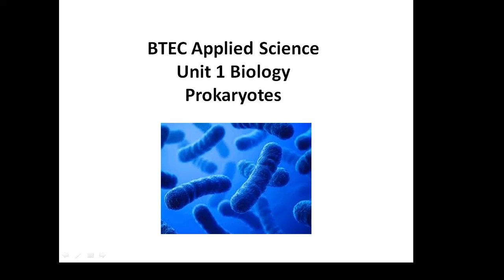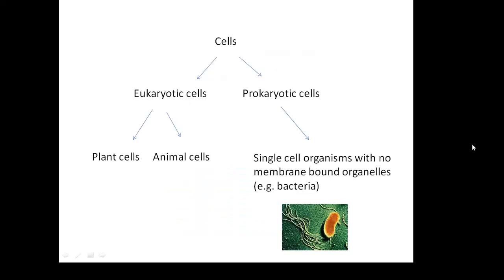BTEC Applied Science Unit 1 Biology: prokaryotes and prokaryotic cells. You've got eukaryotic cells and prokaryotic cells. Eukaryotic cells are plant and animal cells.